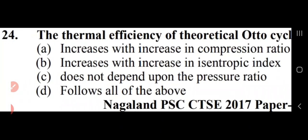The thermal efficiency of a theoretical Otto cycle increases with increase in compression ratio, and also increases with increase in isentropic index, and does not depend upon pressure ratio — all of the above apply. So option A is right: efficiency increases with increasing compression ratio.